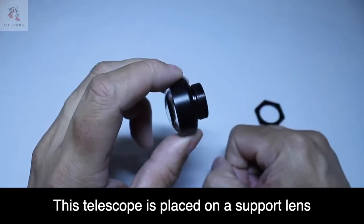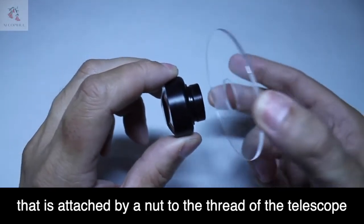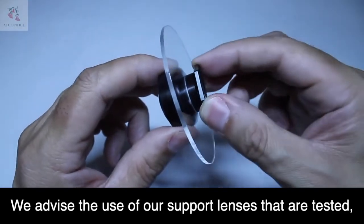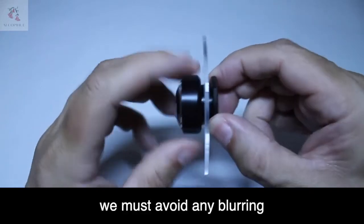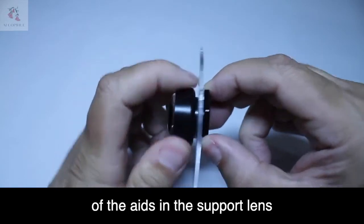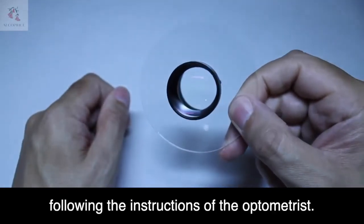This telescope is placed on a support lens, attached by a nut to the thread of the telescope so that it can be installed into glasses. We advise the use of our support lenses that are tested. We must avoid any blurring in addition to checking the correct placement of the aids in the support lens that go into the glasses following the instructions of the optometrist.